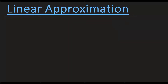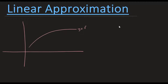Let's talk about linear approximation. Suppose we have a curve, let's call it y equals f of x. Here's a point on the curve — call this one a. So that means this is your function value at a, call it f of a. Since we know how to find derivatives, we know how to find the tangent line at any given point on the curve. So I can find the tangent line through the point a.